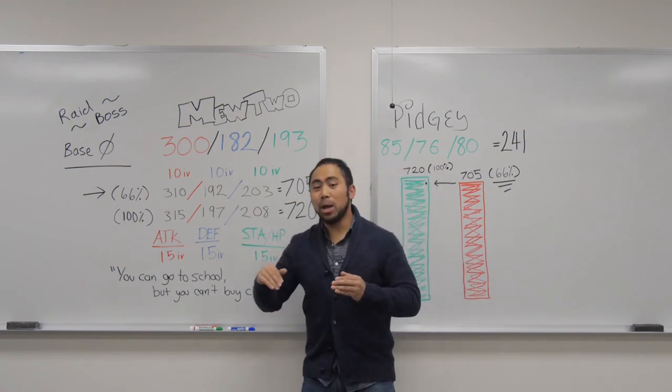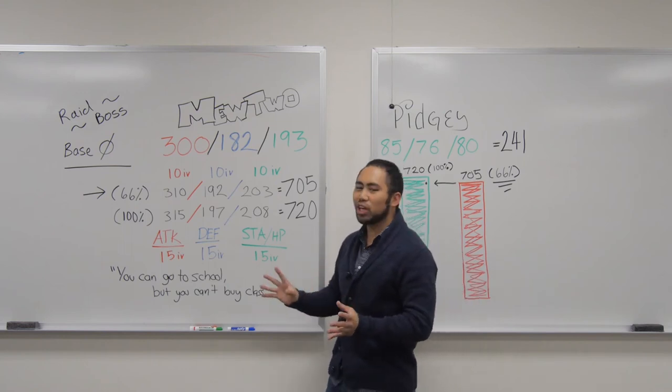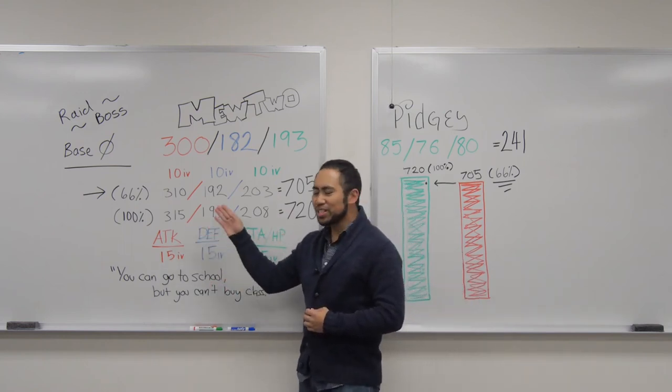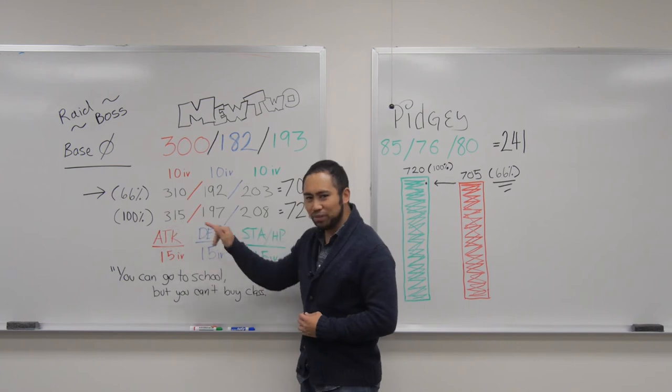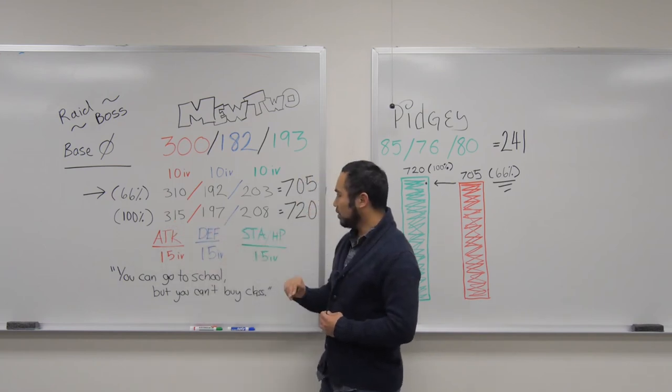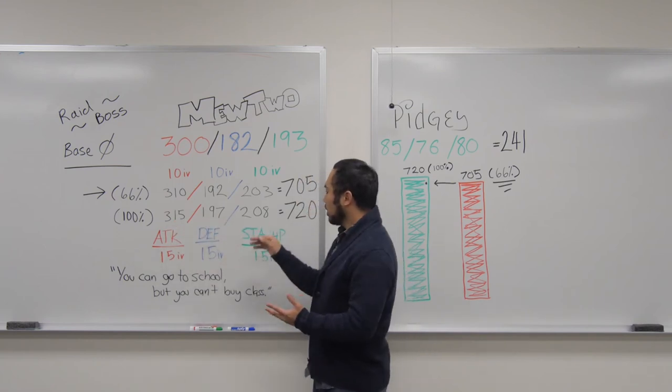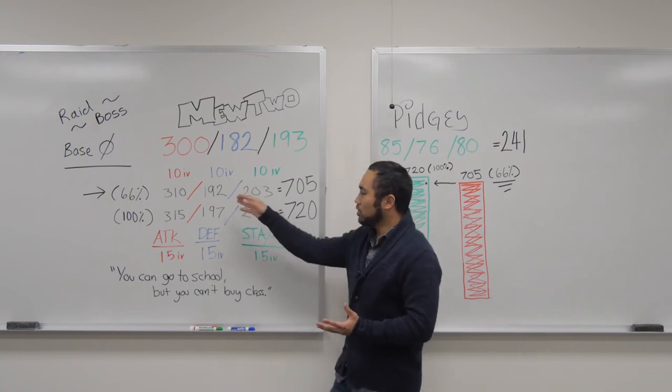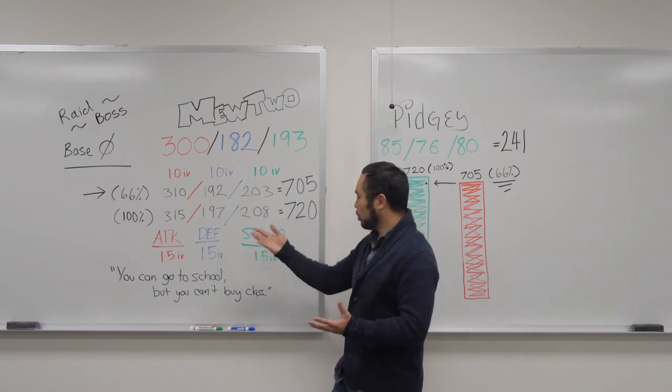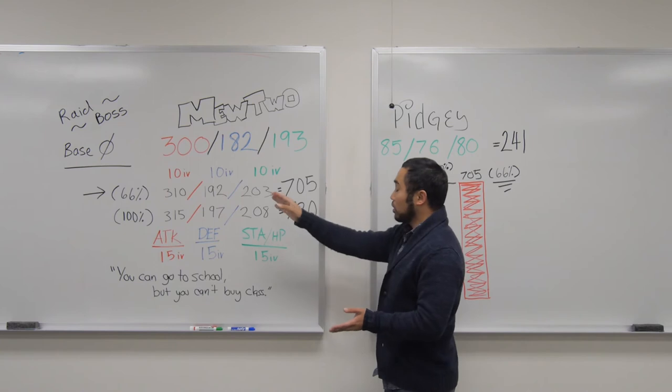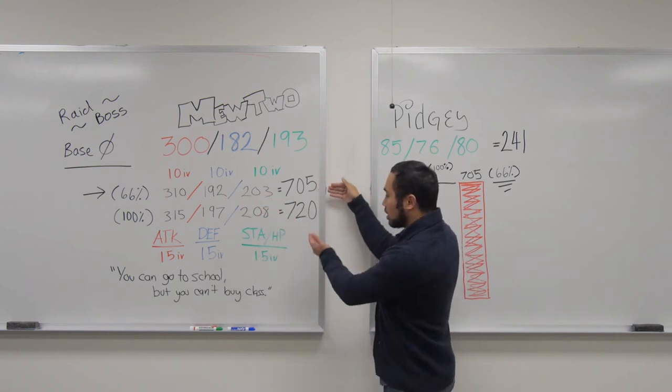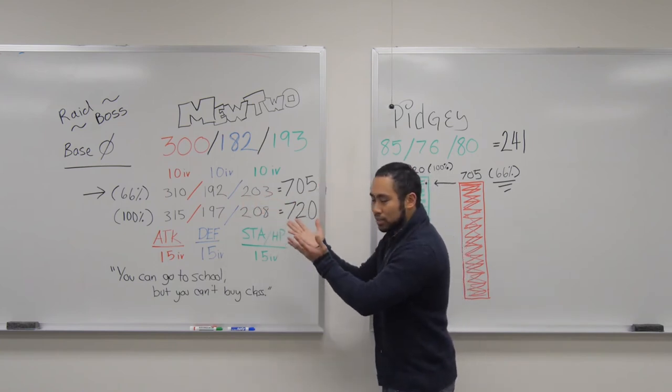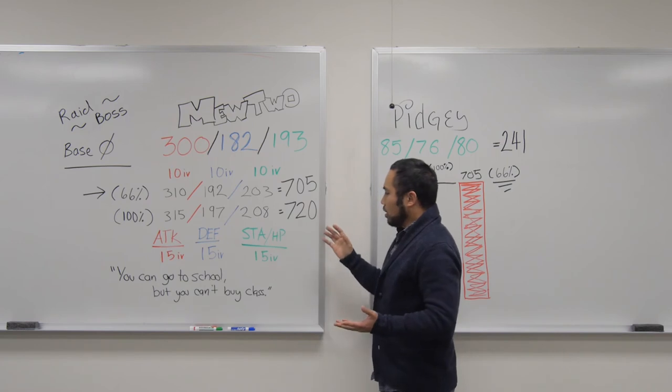Now, let's look at the polar end of it. Let's look at Perfection. Just 5 points. 315 Attack, 197 Defense, and 208 Stamina. That's it. Just add 5 points to that, and you're adding 15 points to all of this, 720 base. That's not much.